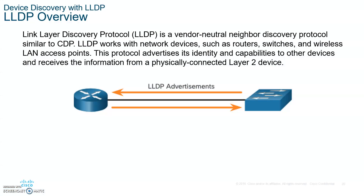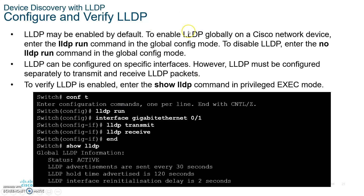Another protocol similar to CDP is the Link Layer Discovery Protocol, LLDP. Write down that it is vendor-neutral and similar to Cisco CDP, but may or may not be enabled by default depending on the vendor. LLDP must be configured separately to transmit and receive. To enable it on an interface, go to the interface and type 'lldp transmit' and 'lldp receive'. To enable it globally, type 'lldp run'.